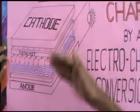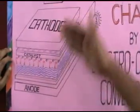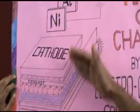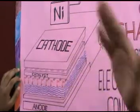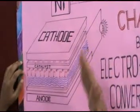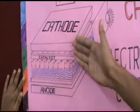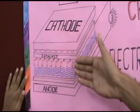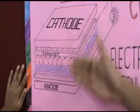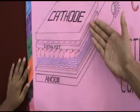So with the help of a catalyst — here we are using the cathode itself as the catalyst — that is spongy nickel. We are splitting H⁺ ions into electrons and protons.